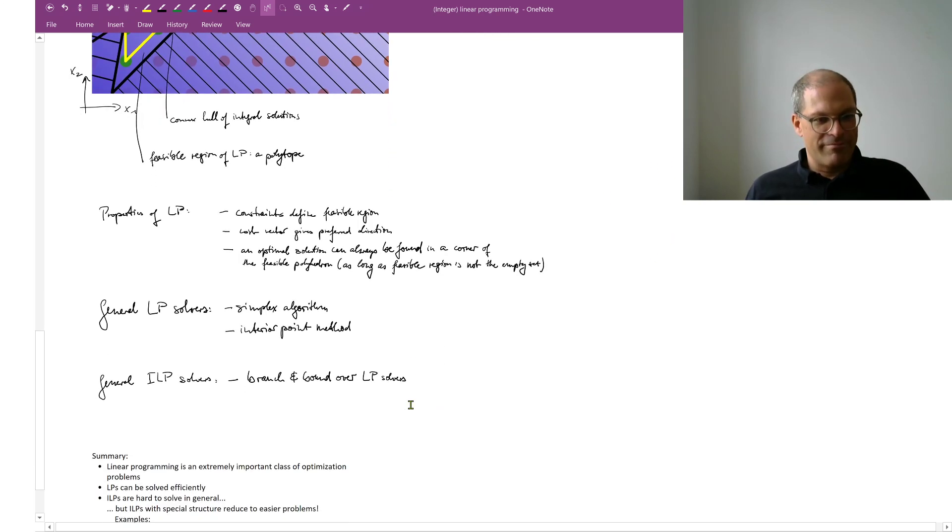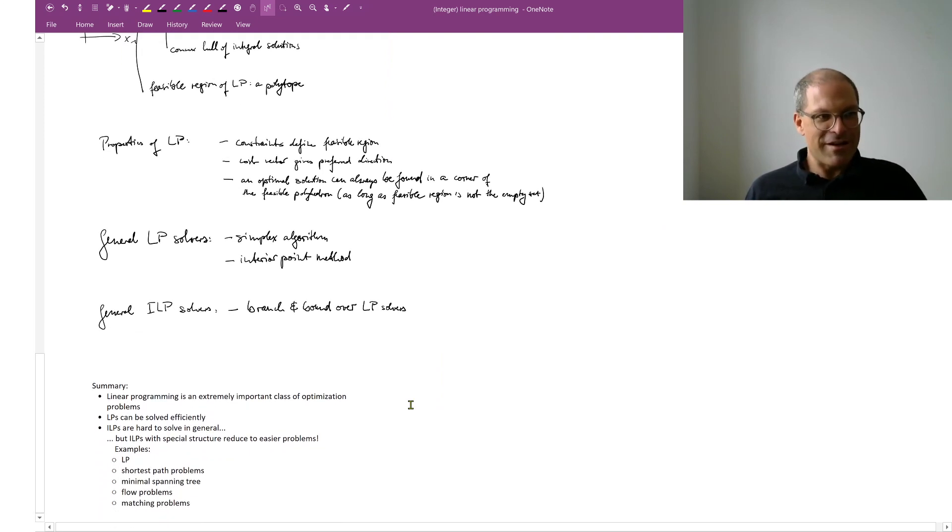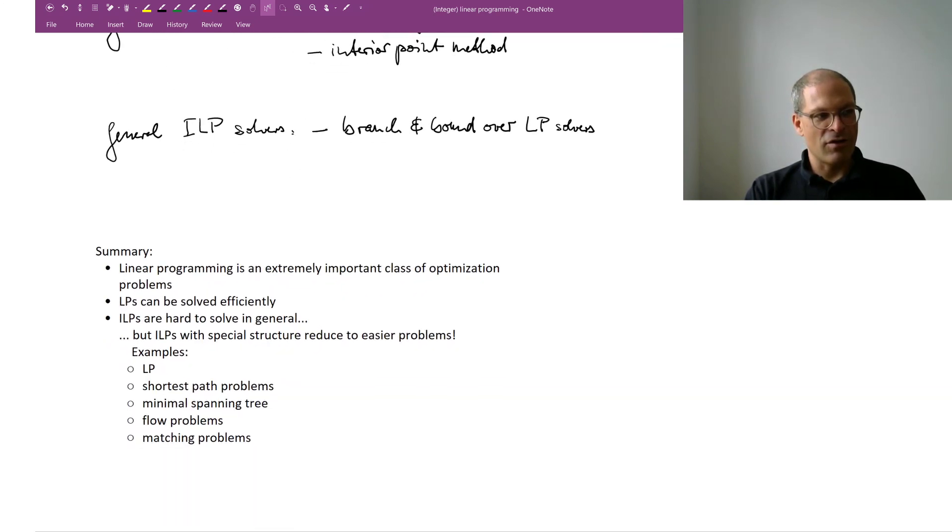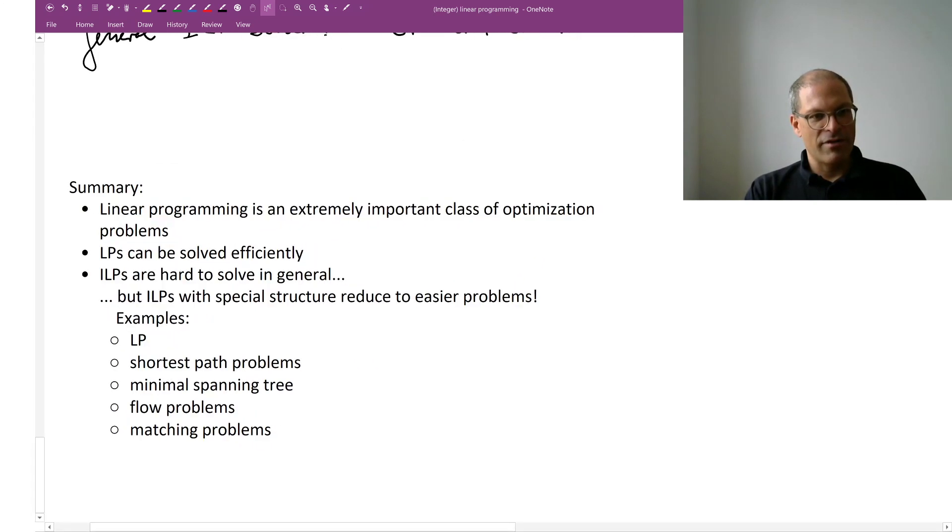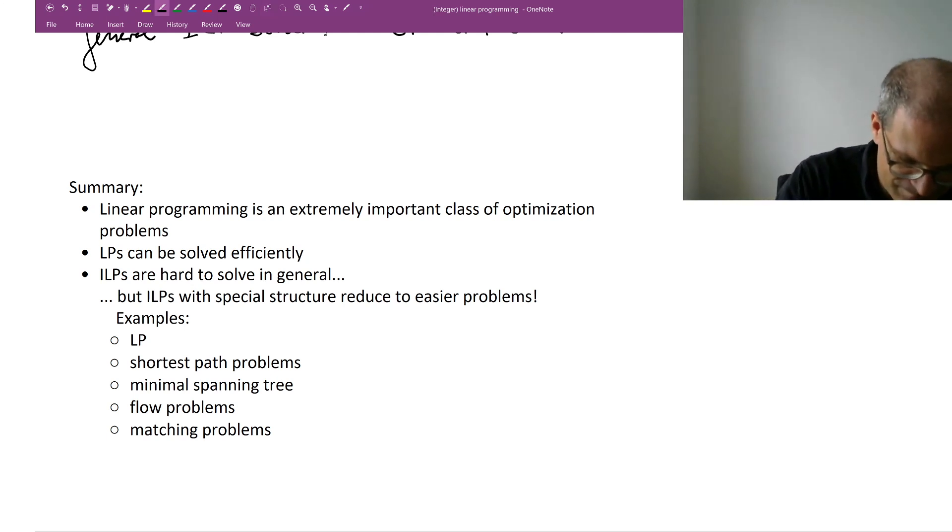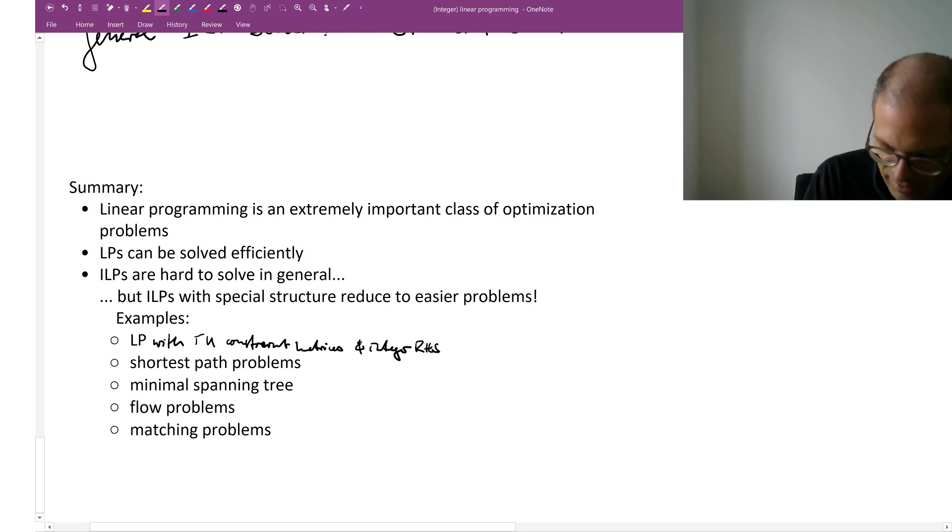Good. Summary: linear programming is an extremely important class of optimization problems. Linear programs can be solved efficiently. Integer linear programs are hard to solve in general, but not all integer linear programs are created equal. Some have special structure which reduce them to easier problems. Famous examples are linear programs with a totally unimodular constraint matrices and integer right hand side. I will define these terms in a moment.